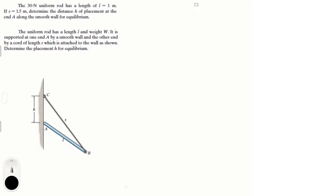This problem is all about trigonometry and one clever realization which we're going to work through together. Let's draw the free body diagram. You have the weight of the rod going down at the halfway point of the rod. You have tension going along the string towards C. And then you have a reaction AX going to the right — there's no AY because it's a smooth wall. AX goes to the right because the tension T goes to the left.